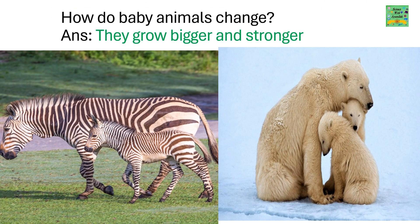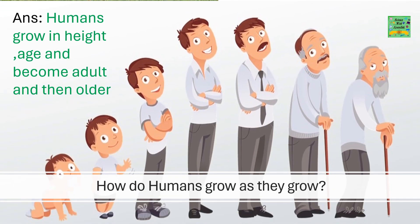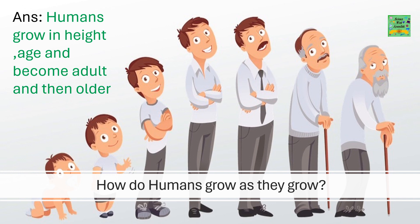How do baby animals change? They grow bigger and stronger. How do humans grow? As they grow, humans grow in height and age, and become an adult, and then grow older.